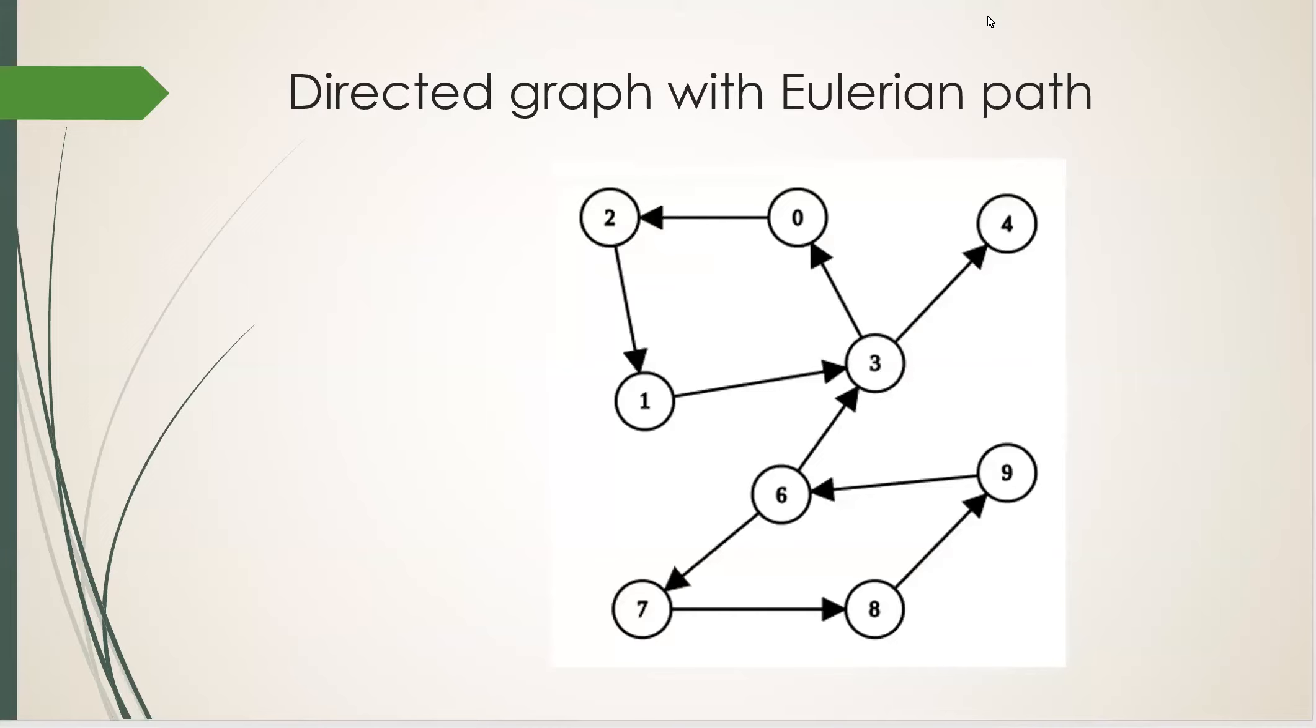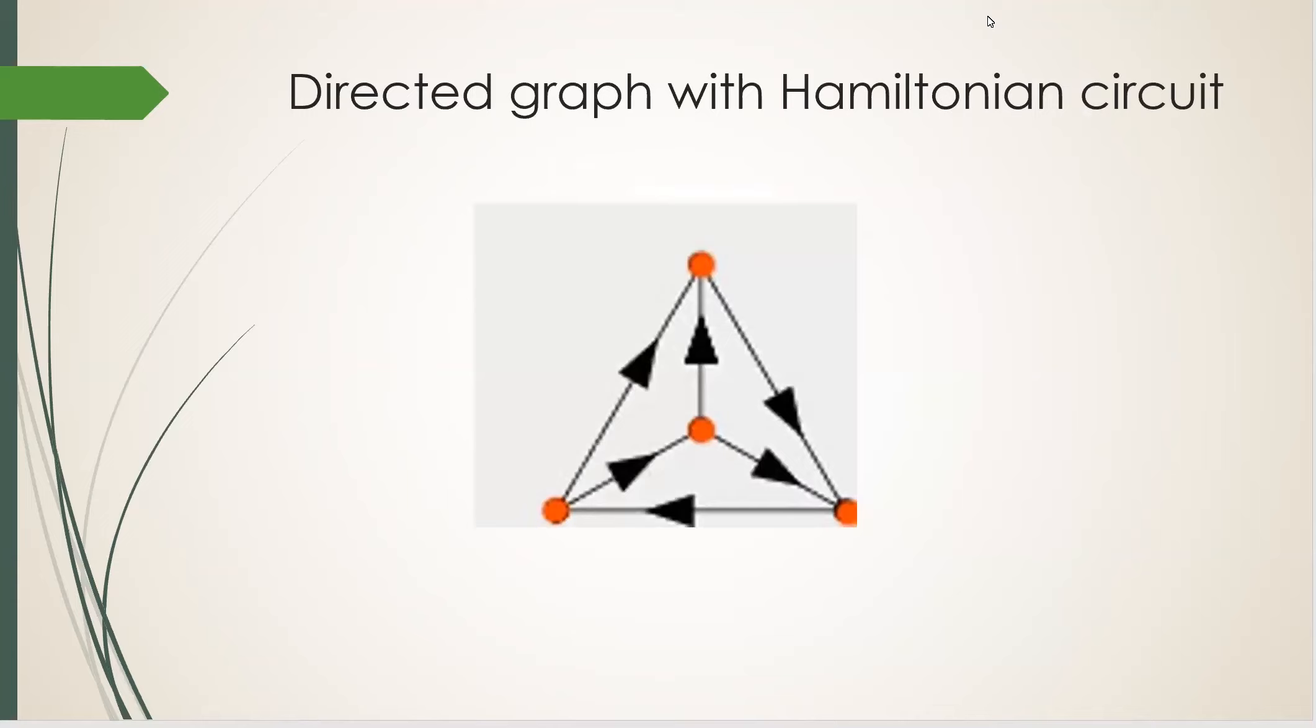In this example of a directed graph, there is an Eulerian path. However, it does not have a Hamiltonian path. Let's look at this graph. It has a Hamiltonian circuit. But it does not have an Eulerian path or circuit.